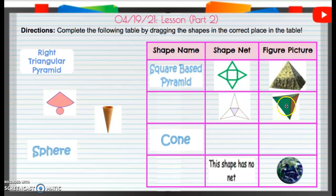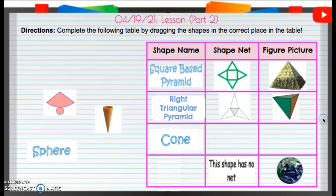This one, let's see. It's either going to be a sphere or a right triangular pyramid. This does come up to a point, so it will be a pyramid. So, it is going to be a right triangular pyramid. All the triangles are right triangles.